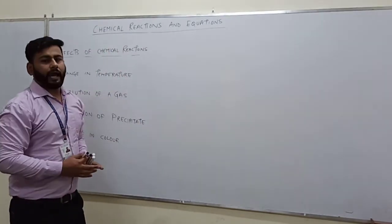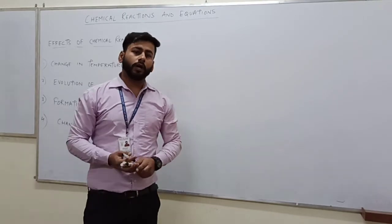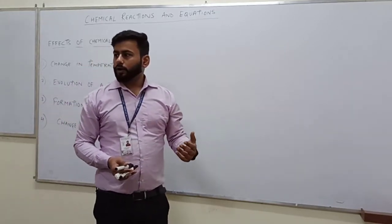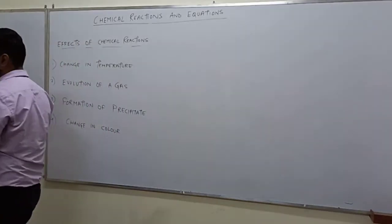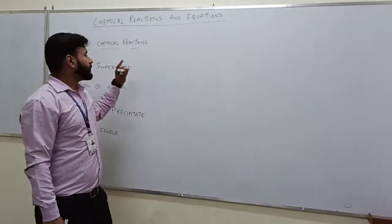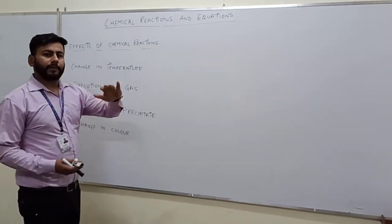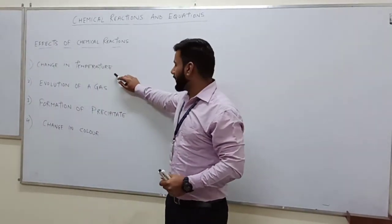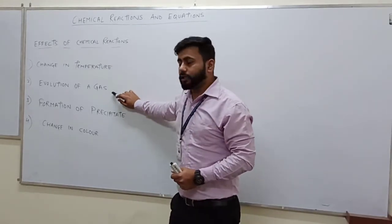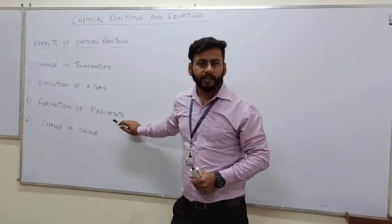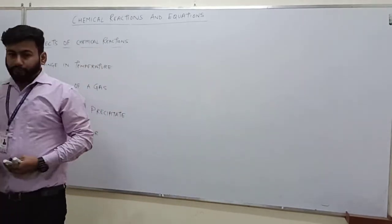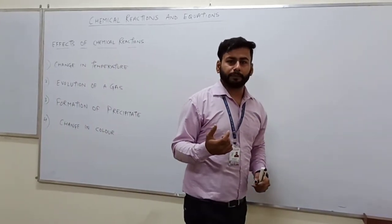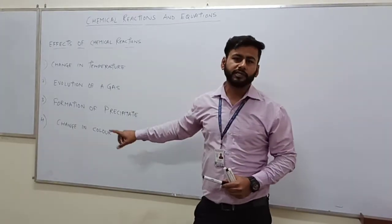Now we have learned about chemical reaction and equation. Now we will learn about what are the basic effects of chemical reaction — like whether a chemical reaction has occurred or not, and how we will get to know about that. So these are the effects which we basically observe: the first one is either there will be a change in temperature, either there will be an evolution of gas, or there will be the formation of precipitate, or there will be some change in color.